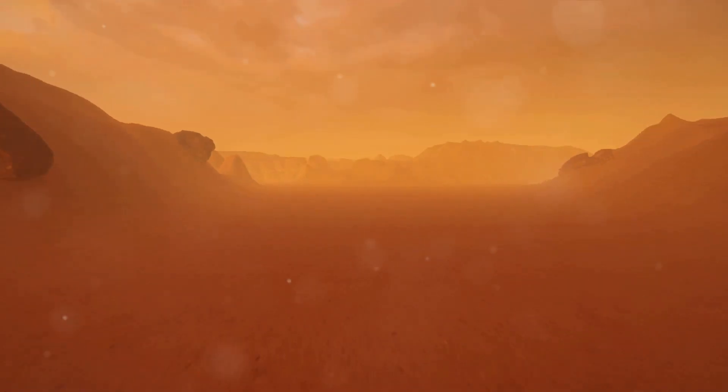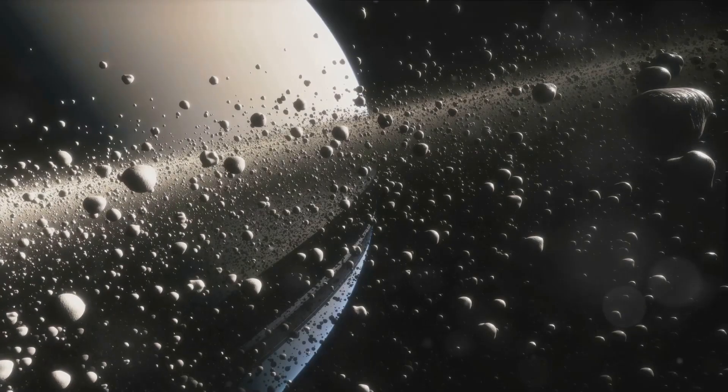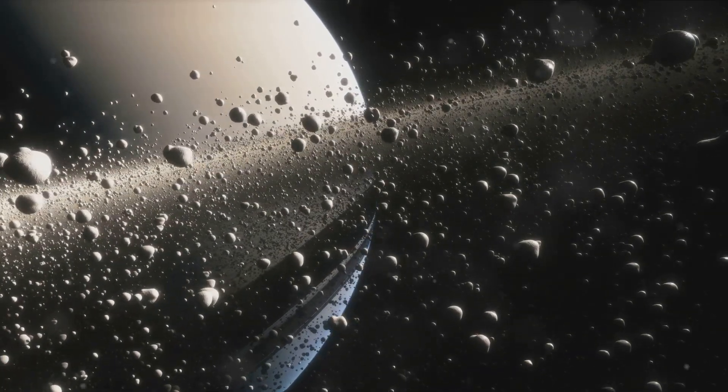The red planet Mars is next, a rocky world with the tallest volcano and deepest canyon in the solar system. Between Mars and Jupiter lies the asteroid belt, a ring of millions of space rocks, remnants of the early solar system.